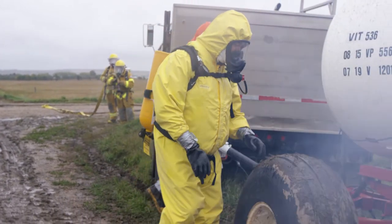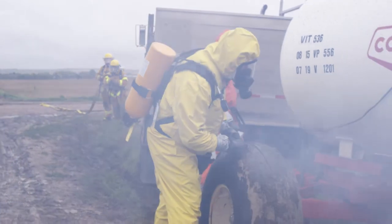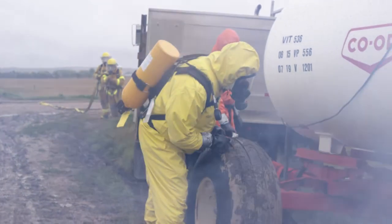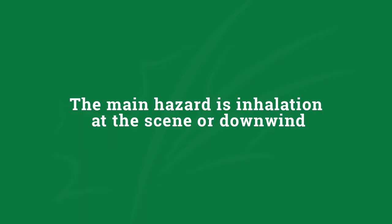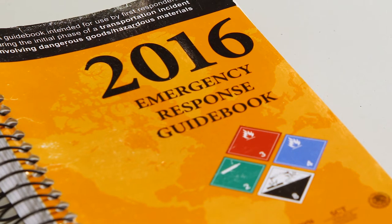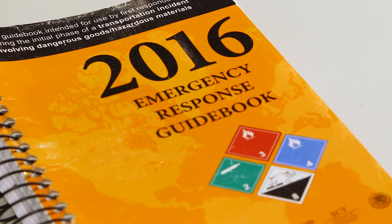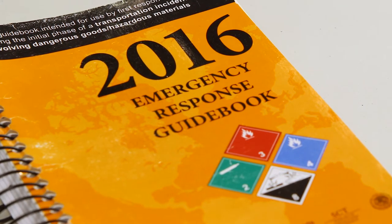Keep all other personnel out of the restricted zone. In review, remember the main hazard in an anhydrous ammonia incident is inhalation, both at the scene and downwind from the release. The focus must be on keeping people out of those zones until the incident is controlled. Refer to the ERG table of initial isolation and protective action distances.